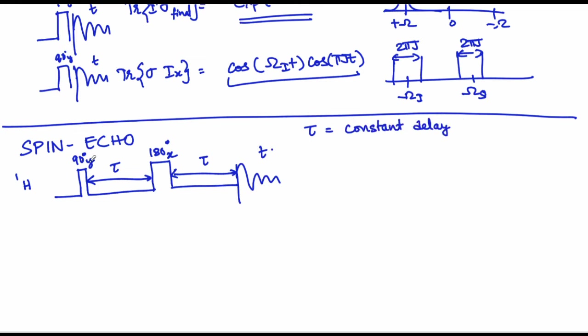The 90 degree pulse is the excitation flip angle pulse, while the 180 degree pulse — as you will soon see — is a refocusing type of pulse.